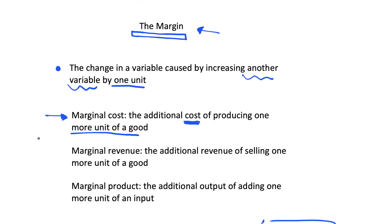That's the concept of marginal cost. We can also think about marginal revenue, which is the additional revenue of selling one more unit of a good, and we could do the same exercise. We can think of marginal product, which is the additional output of adding one more unit of an input. There are so many more marginal variables we can come up with, and in future videos we will see why it's so important in economic maximisation.